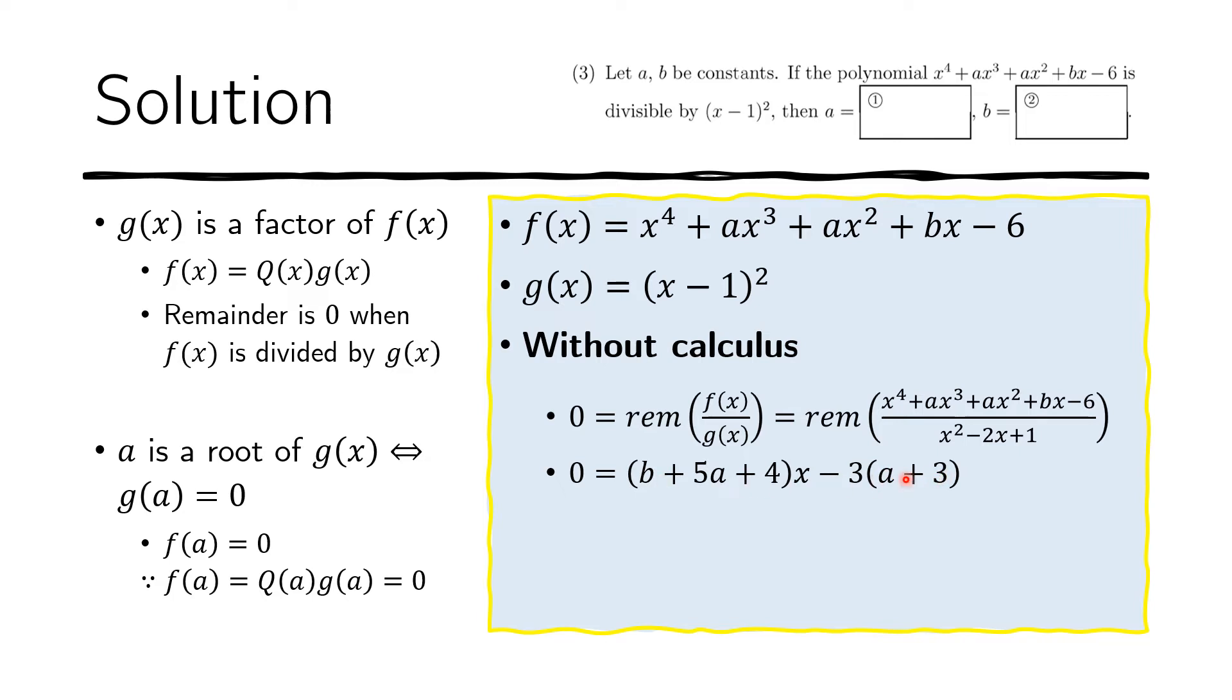Now, what this tells us is that if we do this division, regardless of the value of our x, this should hold, this identity should hold whatever the value of x is. And so what that actually means is that when you want to compare only the coefficients, because we should ignore x, because whatever value of x, the whole thing should still work.